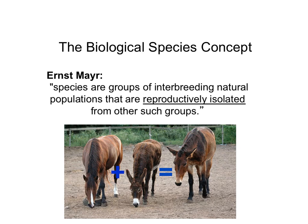An example of the biological species concept: horses and donkeys are different species because, even though they can be forced to interbreed and will produce a mule, mules are sterile — they are not reproductively viable. This means the two species cannot truly interbreed, because even though they produce an offspring, that offspring cannot reproduce.